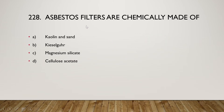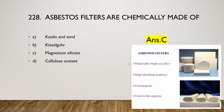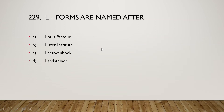Next question: asbestos filters are chemically made of kaolin and sand, magnesium silicate, or cellulose acetate? The right answer is option C — magnesium silicate. Asbestos filters are disposable single-use discs with high absorbing tendency. They are carcinogenic and have been used in cigarettes.